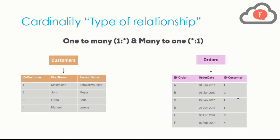You can call this a one-to-many relationship. Conversely, if you look at it in the opposite direction — from Orders to Customers — it becomes many-to-one. This is how you understand the type of relationship between two data sets: one-to-many and many-to-one.